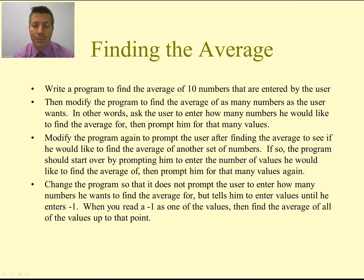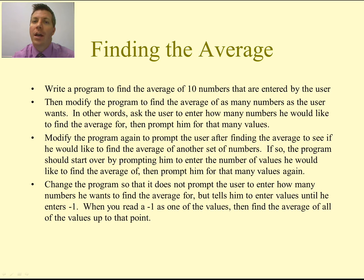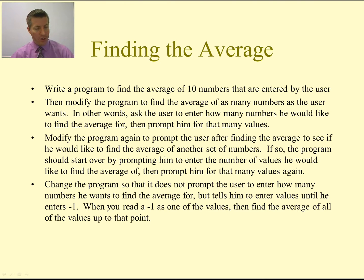Then we're going to modify the program again — prompt the user after finding the average to see if they would like to find the average of another set of numbers. If so, we'll start the program over. And the last part: instead of asking how many numbers, we'll just say enter a number, enter another, enter negative one when you're done. We'll find the average of those numbers. A little bit of logic is going to go into this program, but it should be pretty fun.